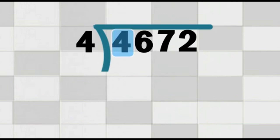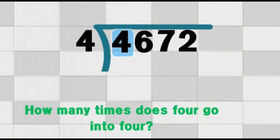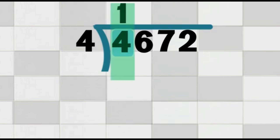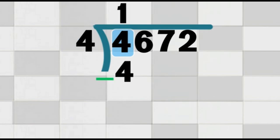Divide the first digit. Now, look at the first digit of 4,672 — that's the number 4. We ask: how many times does 4 go into 4? That's easy. 4 goes into 4 exactly one time. So, we write the number 1 on top of the division bracket, right above the 4. Now we multiply: 1 multiplied by 4 is 4. Then we subtract: 4 minus 4 equals 0. We write the 0 under the 4. So far, our answer on top is 1.